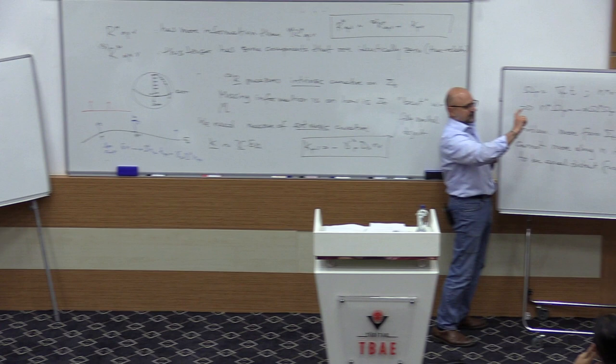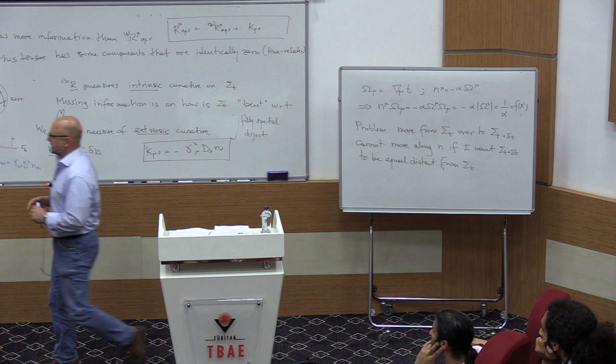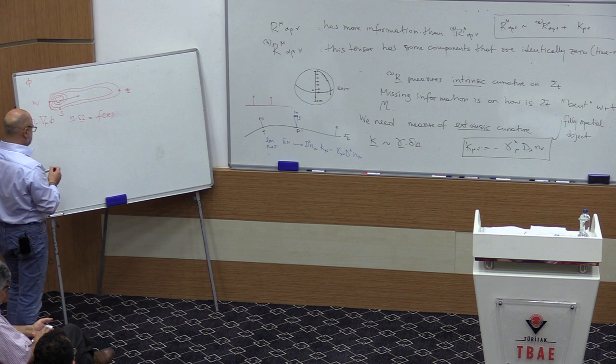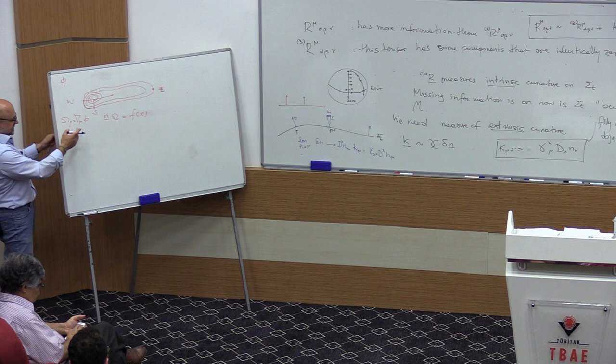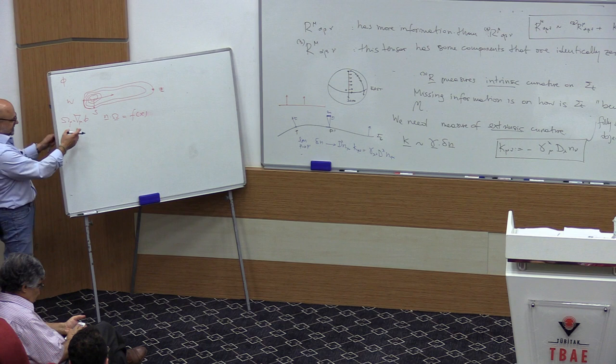If I go simply along n by a certain amount, I am not guaranteed to end up equally transported to the next hypersurface. So I want a new vector, which I call t, and I want this vector to be a bit more complicated than n.